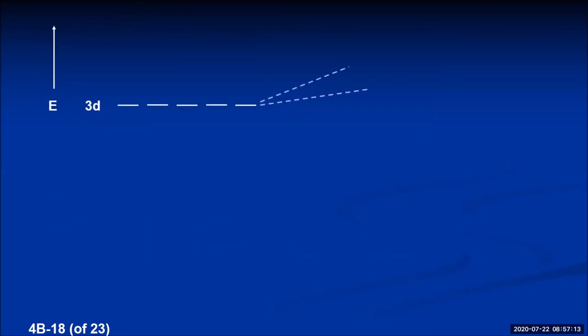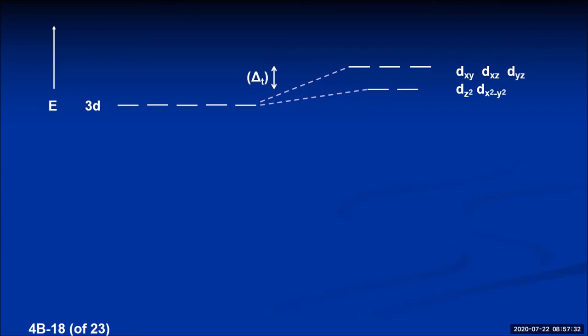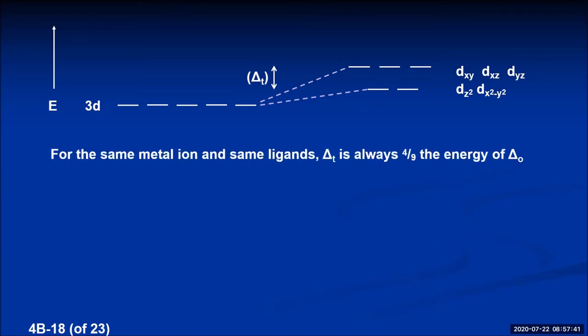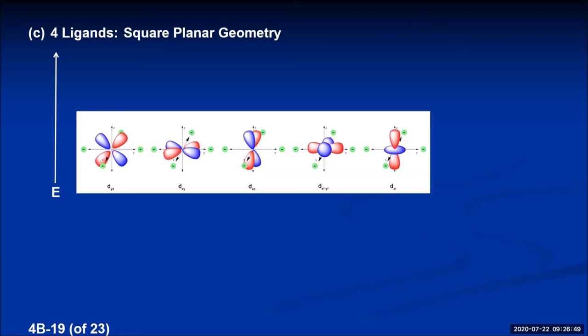Graphing the d orbitals in a tetrahedral field: with no ligand field the d orbital energies are degenerate. In a tetrahedral field, the dz² and dx²-y² are low in energy, and the dxy, dxz, and dyz are higher in energy. The difference in energies is the splitting energy, called delta sub t for tetrahedral. It's been shown mathematically that the tetrahedral field splitting is always four-ninths the energy of the octahedral field splitting for the same metal ion and ligands — so it's always a smaller value.